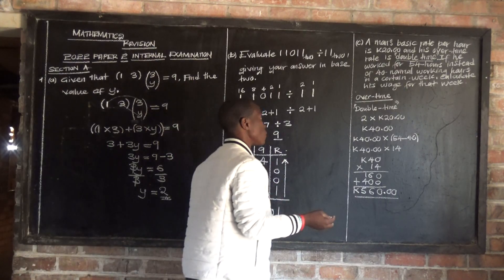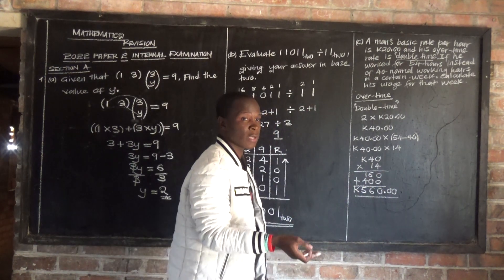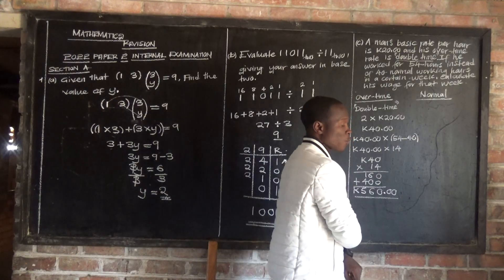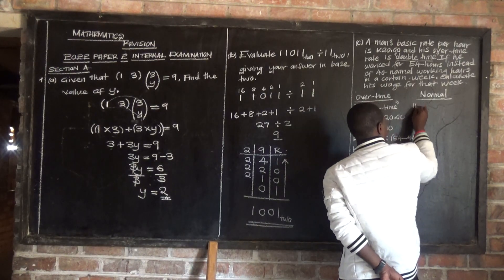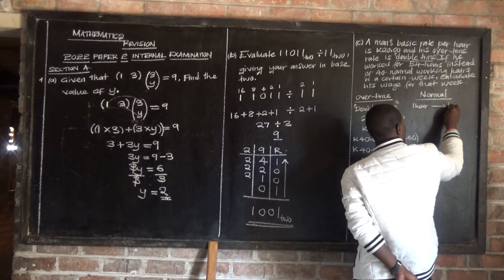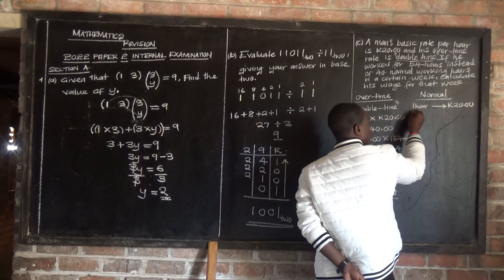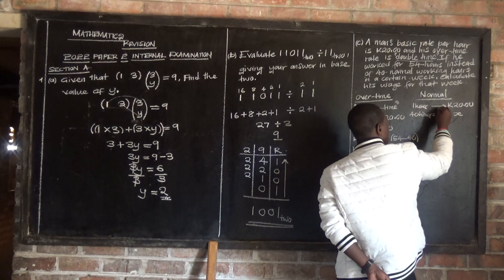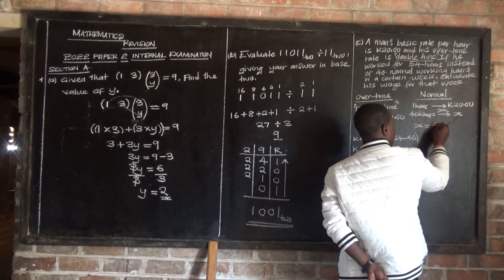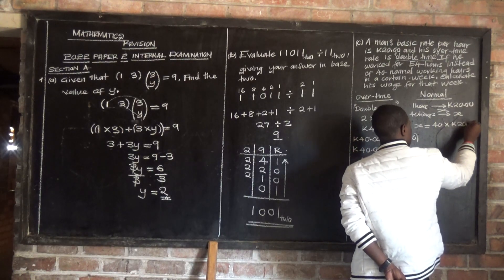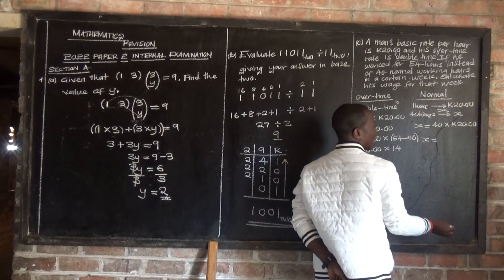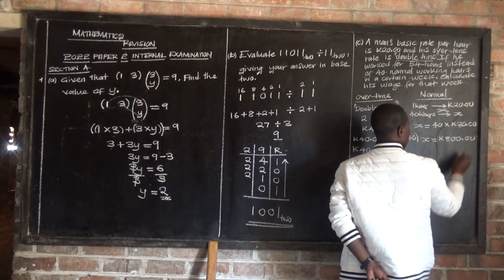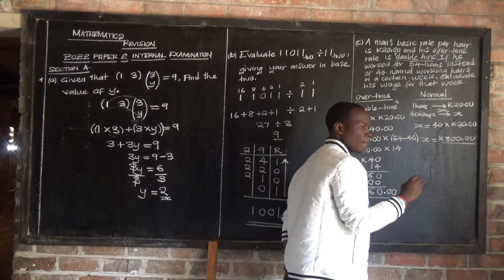Next we find his normal pay — the amount he was given for working the normal 40 hours in a week. For the normal pay: if 1 hour gives 20 cedis, then 40 hours gives x. Cross-multiplying, x is equal to 40 multiplied by 20 cedis. So 40 times 20 equals 800 cedis. So his normal pay is 800 cedis.